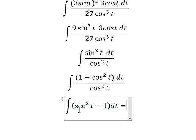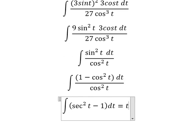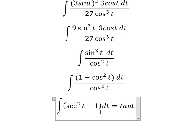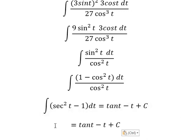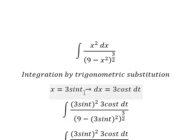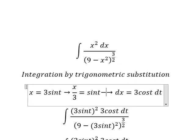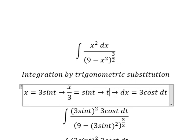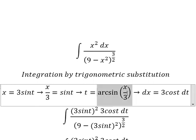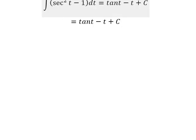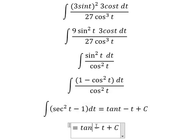The integration of sec²(t) gives tan(t). The integration of 1 gives t, and we add the constant C. For t, we divide both sides by 3 to get t equals arcsin(x/3). We then substitute back for t to get the final answer.